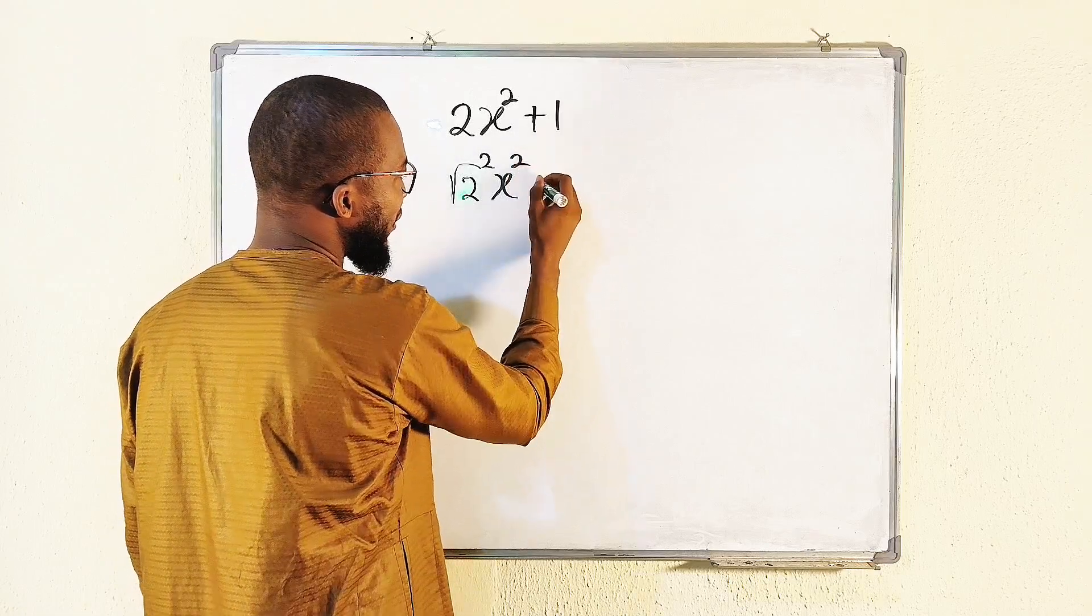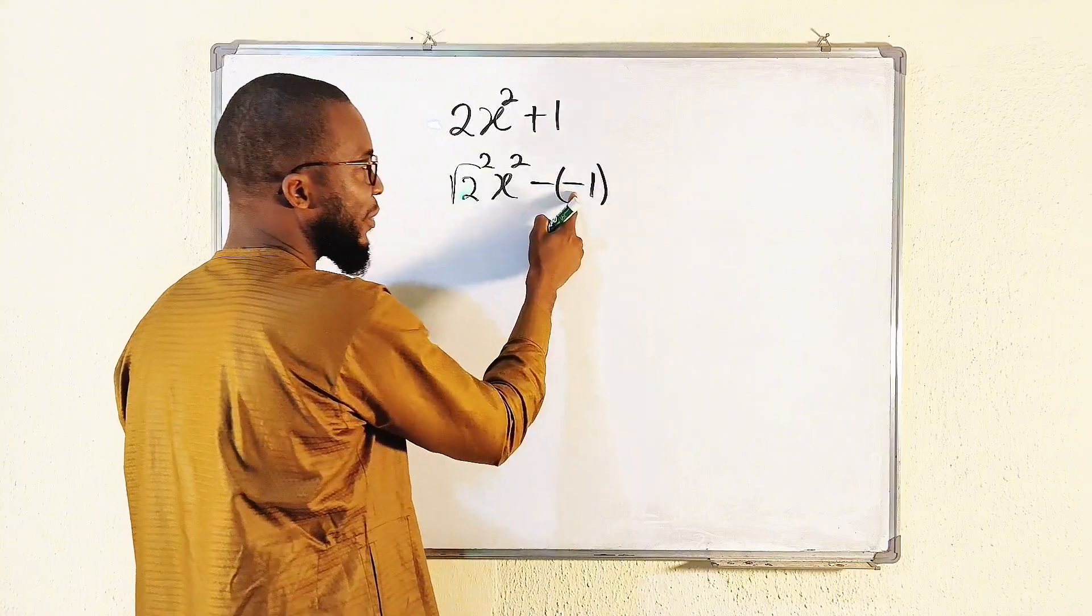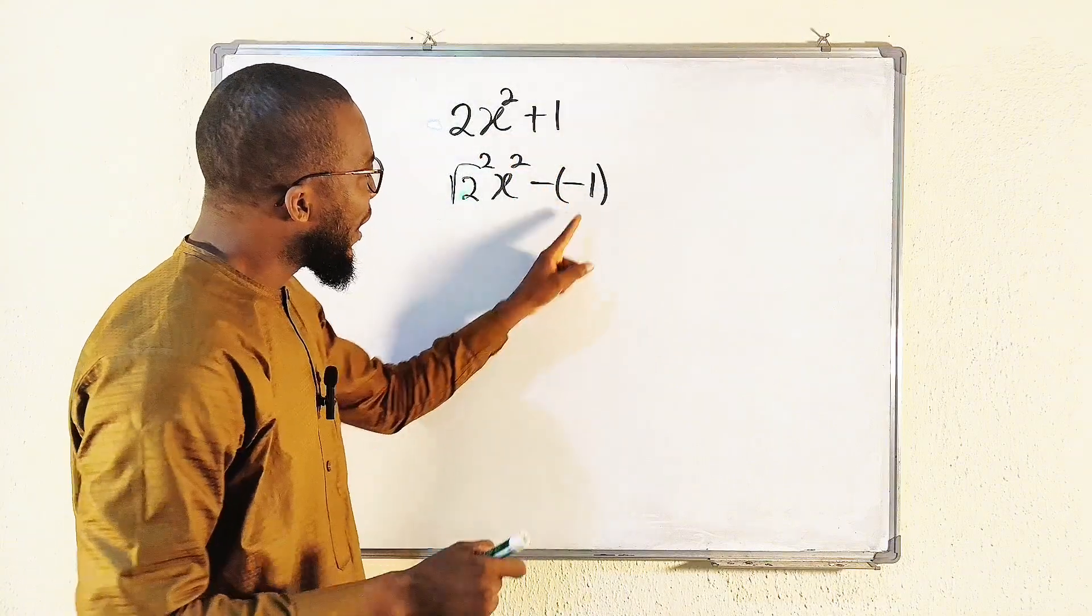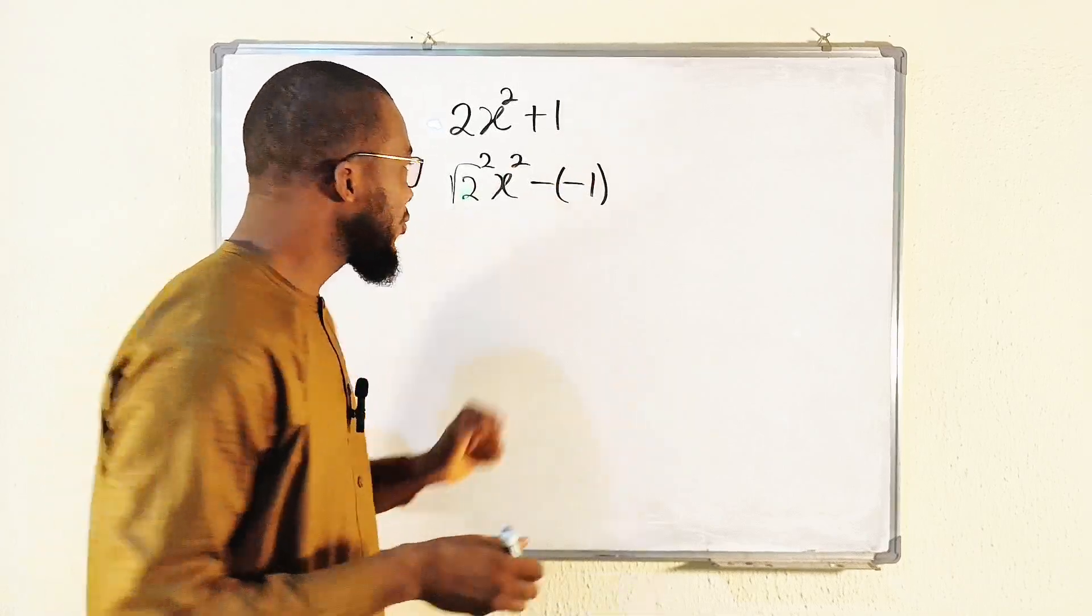I would like to write plus as minus and minus one, right? Remember that minus minus will give us plus. And negative one is the same thing as i squared in the complex one.